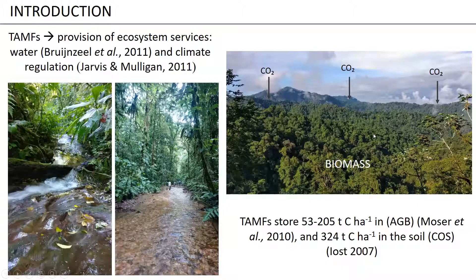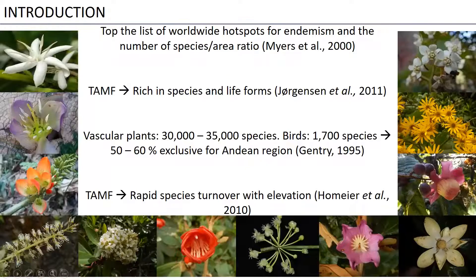These ecosystems top the list of worldwide hotspots for endemism and number of species area ratio, because they are rich in species and life forms. Just for Ecuador, between 30 and 35,000 species of vascular plants and more than 1,700 species of birds have been described, and between 50 and 60% of all those species are exclusive to the Andean region.